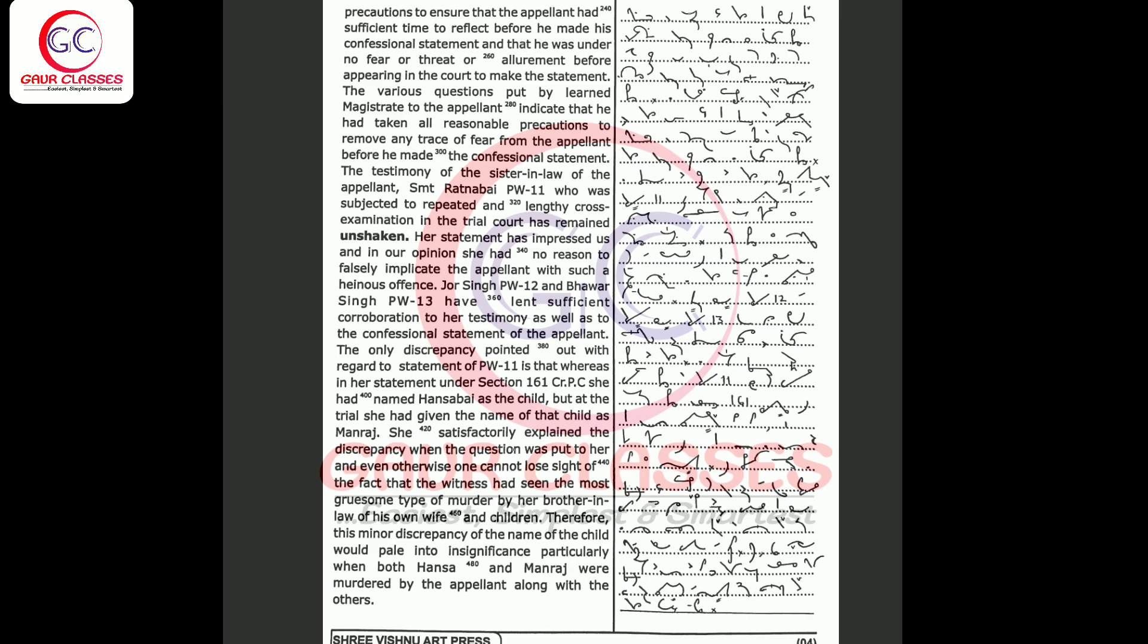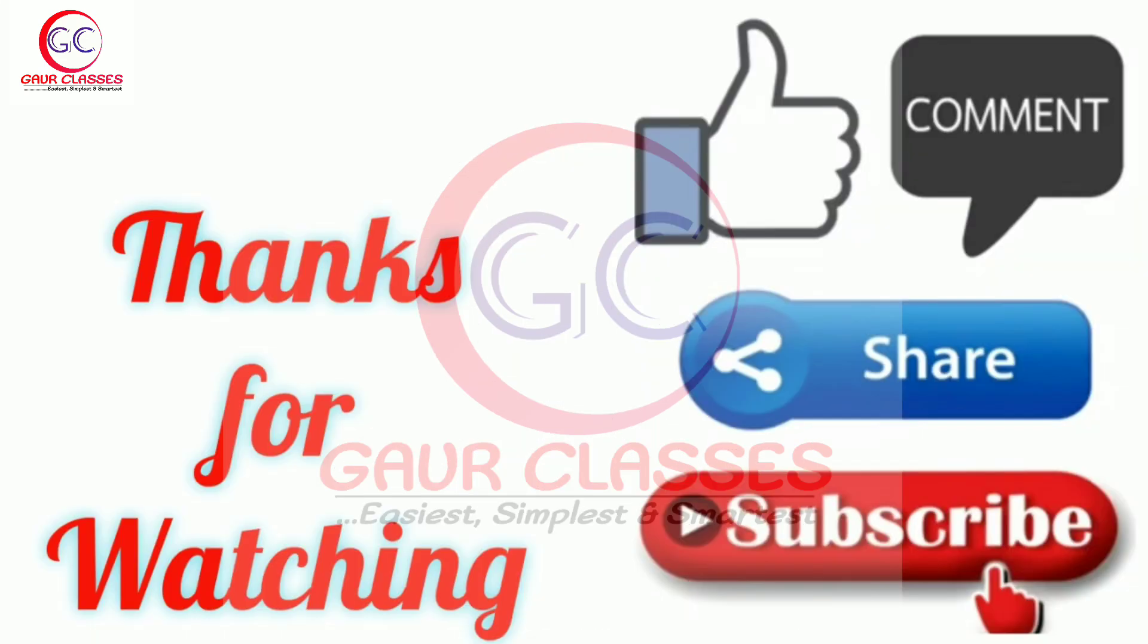Therefore this minor discrepancy of the name of the child pales into insignificance particularly when both Hansa and Manaraj were murdered by the appellant along with the others.